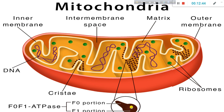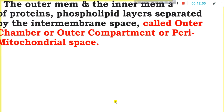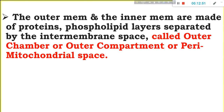Each F1 particle has three parts: head, body, and base. The outer membrane and inner membrane are made of proteins and phospholipid layers separated by the intermembrane space, called the outer chamber or outer compartment or perimtochondrial space.